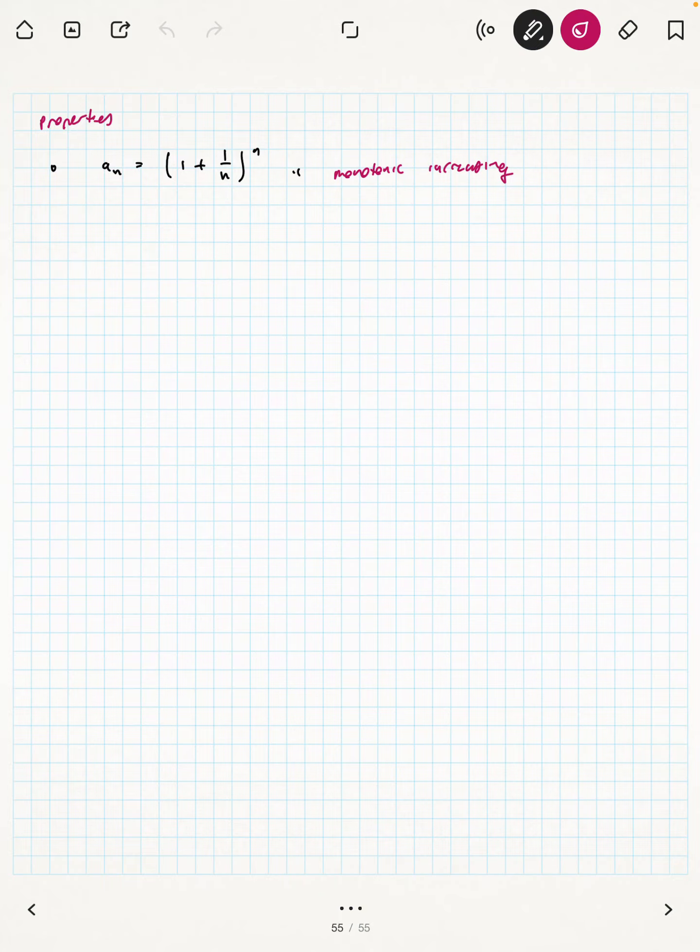Just like we have a definition of increasing for functions of real numbers, we have this definition for sequences. We would say formally, for all n greater than or equal to 1, a_n is less than a_{n+1}. So the larger the n, the larger the a_n.